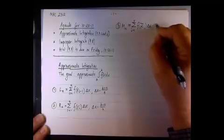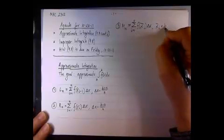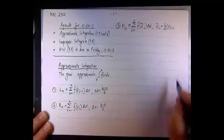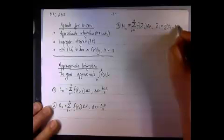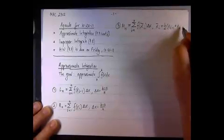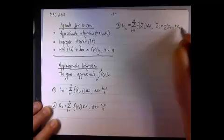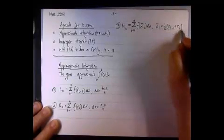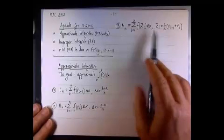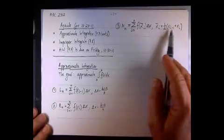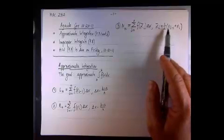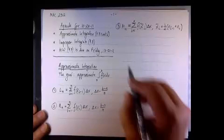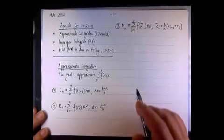X-bar sub i will be one-half the sum of the value to the left, which is i minus 1, and the value to the right, which is i. So again, if you're looking at the interval between x sub 1 and x sub 2, then x-bar will be the average of x 1 and x 2, if i equals 2 in this case.